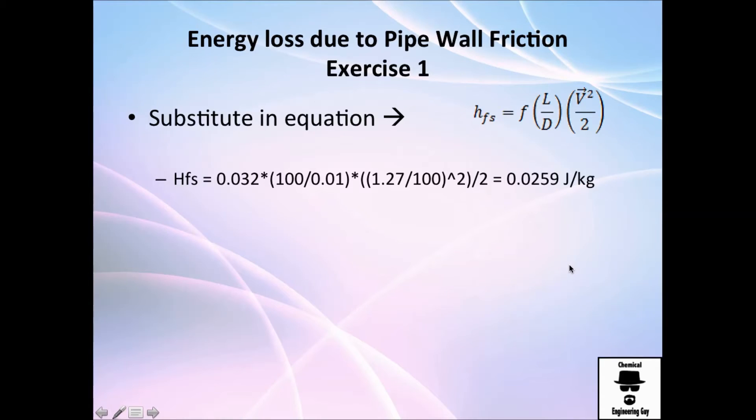And now let's go back. We need this equation in order to calculate the friction loss. So I got the friction factor, which is 0.032. I got the length, which is 100 meters. I got the diameter, which is one centimeter, which if you calculate it, it's 0.01 meters.